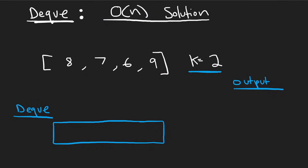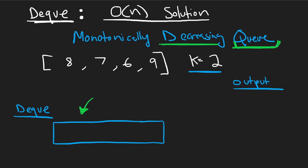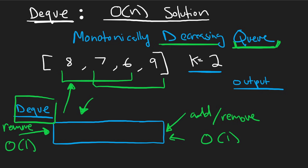Let me show you one last example. By the way, the type of problem this is is called a monotonically decreasing queue. The reason is because our queue is always going to be in decreasing order, which this next example will demonstrate. And the reason we're using a queue rather than a stack is because we want to be able to add and remove elements from the beginning in O(1) time. As our window shifts, we want to be able to remove an element from the beginning in O(1) time, which is why we need a queue.